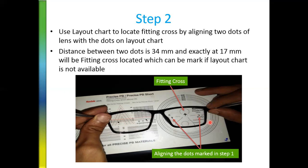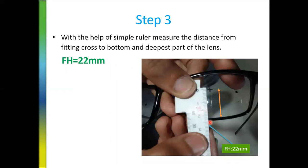After remarking the progressive lens and obtaining the fitting cross, take a normal ruler, coincide it with the fitting cross, and measure from the fitting cross to the inside of the rim. In this example, the measurement is 22 mm — so the fitting height for this lens is 22 mm. This is how we find the fitting height once the lens is fitted.